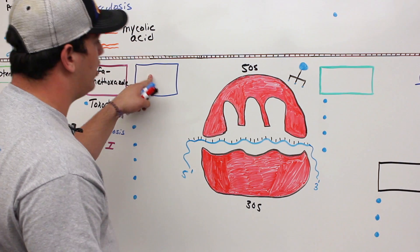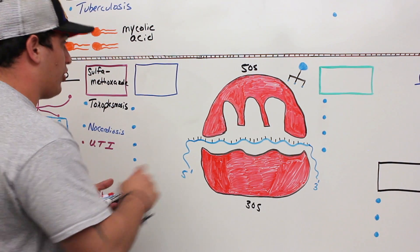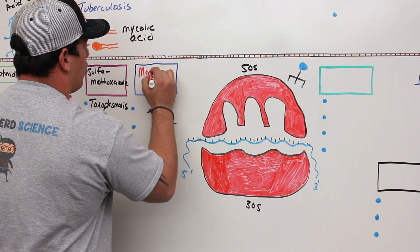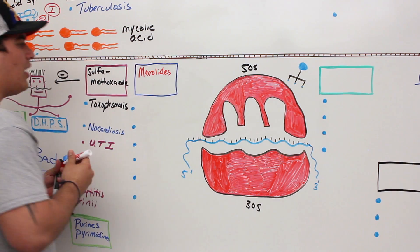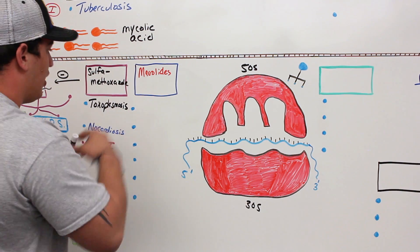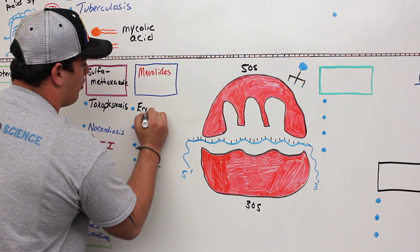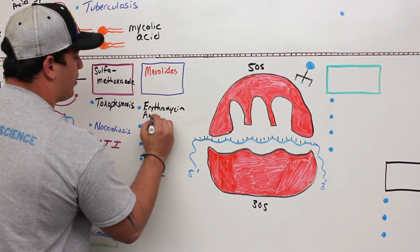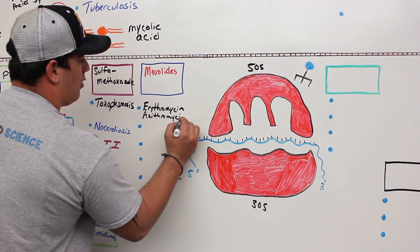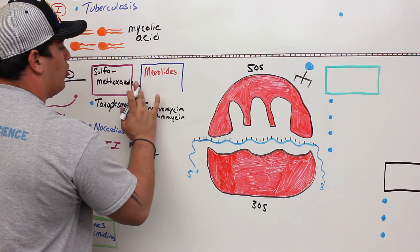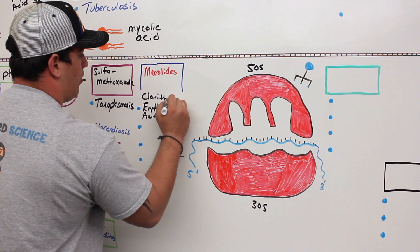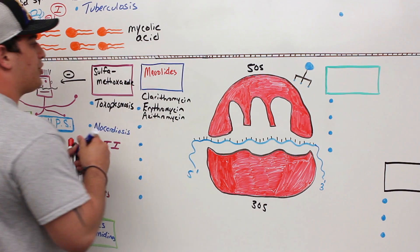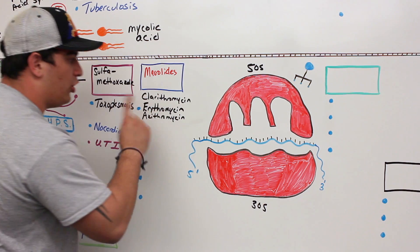The first ones we're going to talk about are the antibiotics targeting the 50s — the macrolides. Specific examples of macrolides include erythromycin, azithromycin, and clarithromycin. These are the macrolide antibiotics.